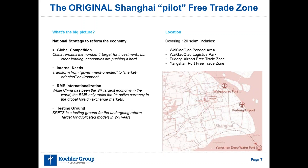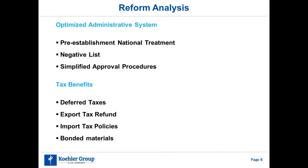The zone started off very small at around 28 square kilometers. Due to its success, within about a year to year and a half, the government expanded the zone area to 120 square kilometers, taking up four different parks and zones and making it into one free trade zone. There was a lot of discussion about the reform analysis. Initially, they focused on four areas: the administrative system, tax benefits, financial management, trade management, the shipping industry, and the logistics industry.